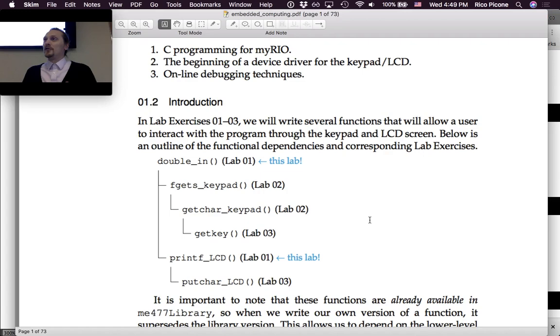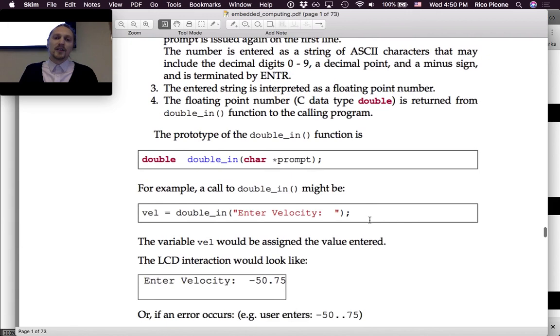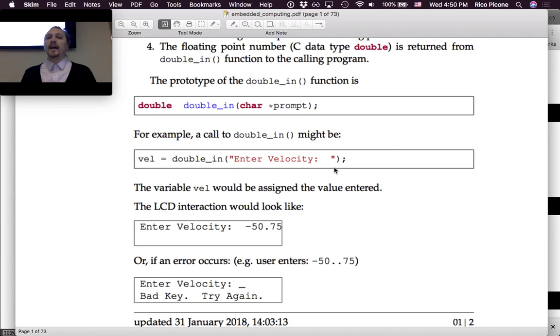To explain how it works, essentially double_in is going to be a function you're going to hand a string to, a prompt. For instance, 'enter velocity,' and it's going to stick that prompt onto the LCD screen. It's going to use these lower level functions to do that.